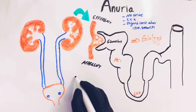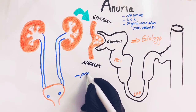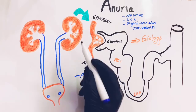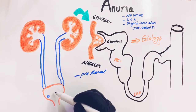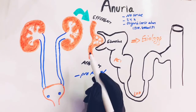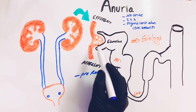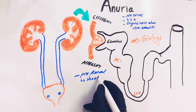The etiology of anuria is divided into three parts: prerenal, renal, and postrenal. For the prerenal etiology, it includes conditions like shock that affect the renal excretion of urine, because shock decreases the blood pressure, which affects the pressure in the glomerulus and leads to decreased excretion of urine.